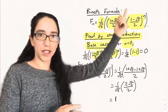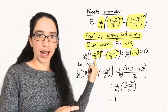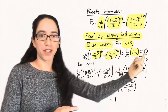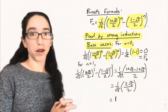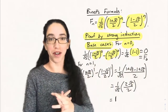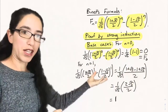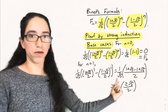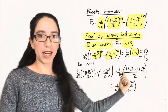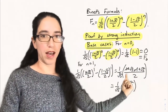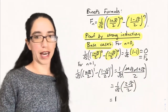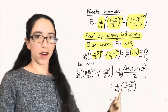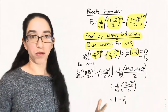When we plug in 0 into this formula, anything to the 0 power is 1. So we just get 1 minus 1 in the parentheses, which is 0. And 0 is F₀. So the formula agrees with F₀ at n equals 0. Similarly, when we plug in n equals 1, we get (1+√5)/2 minus (1−√5)/2. When we combine those fractions, the 1s cancel and the root 5s add to give 2√5/2 over √5. All of those factors cancel to give 1, which is F₁.